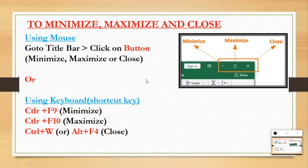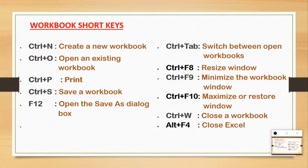Let's go through the workbook shortcut keys once more. Ctrl+N creates a new workbook, Ctrl+O opens an existing workbook, Ctrl+P prints, Ctrl+S saves, Ctrl+F12 is used for Save As, Ctrl+Tab switches between two workbooks, Ctrl+F8 resizes the window, Ctrl+F9 minimizes the workbook, Ctrl+F10 maximizes it, and Ctrl+W or Alt+F4 closes a window.